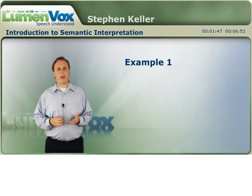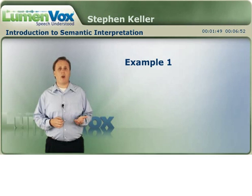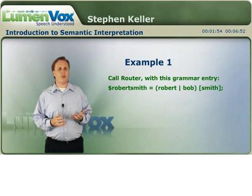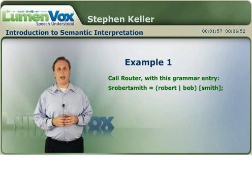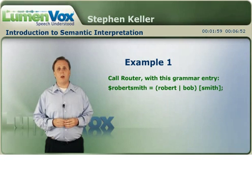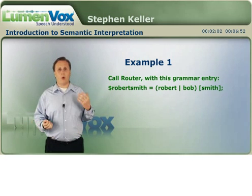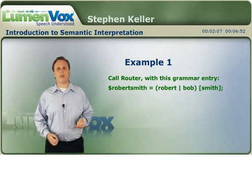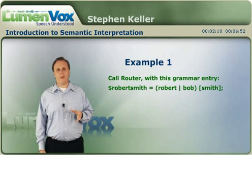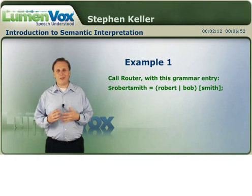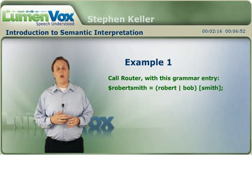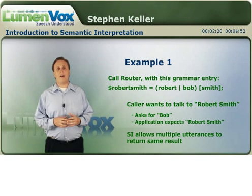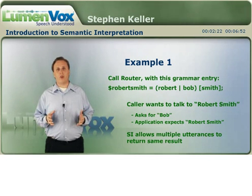Let's take a look at a more in-depth example — another call router. Let's say we have this line in our SRGS grammar. This basically just says that callers can call up and ask to talk to a guy named Robert Smith by saying Robert Smith, Bob Smith, or just Robert or Bob without a last name. So that's a couple of different ways to ask for the same guy. Well, you don't want to have to, from within your application, account for all these different ways — it becomes pretty tricky. Within a grammar, if you put semantic interpretation tags inside the grammar, you could actually have all those different utterances return Robert Smith.